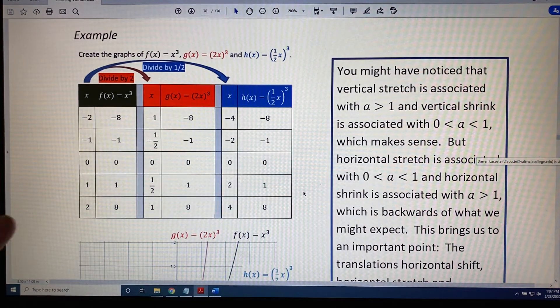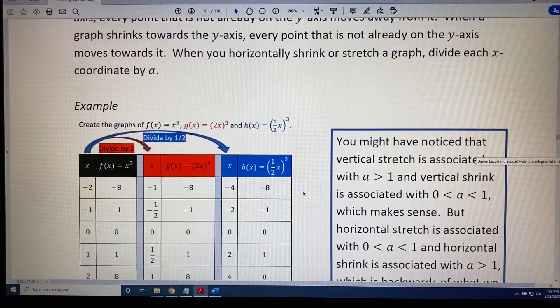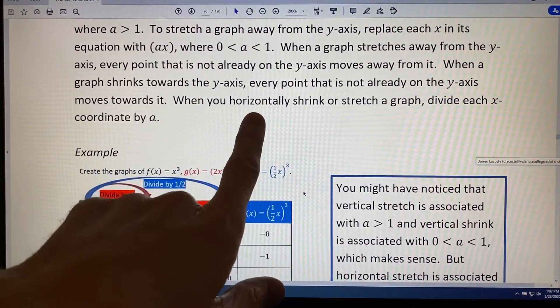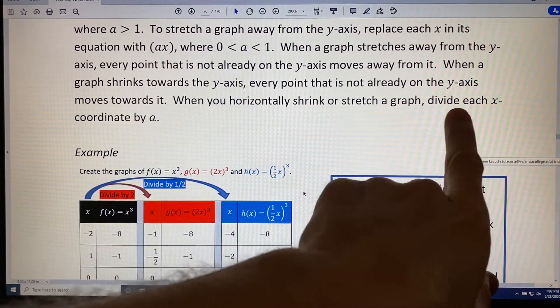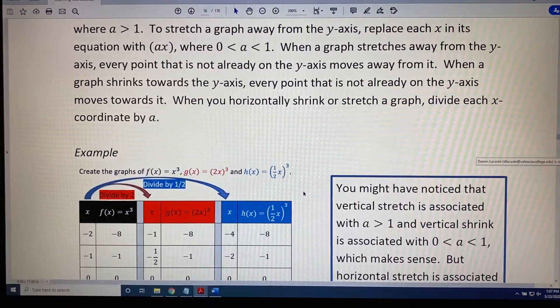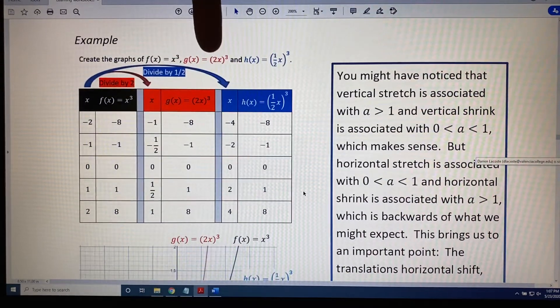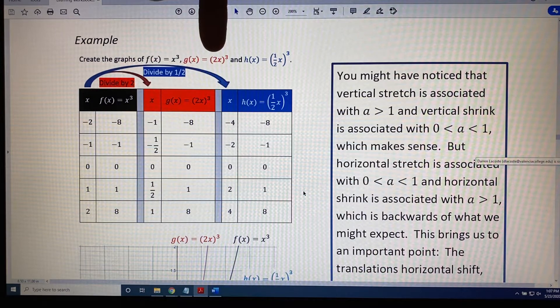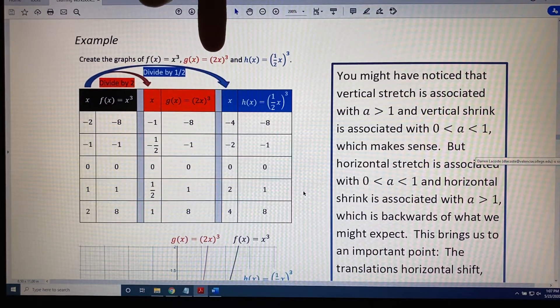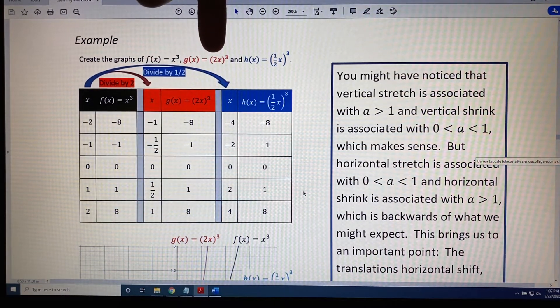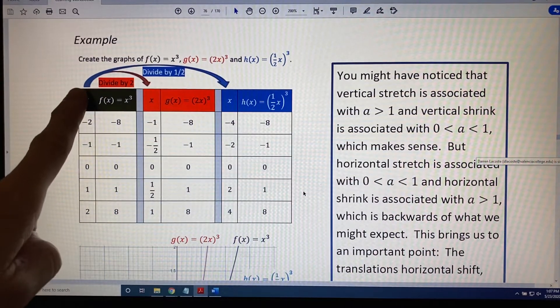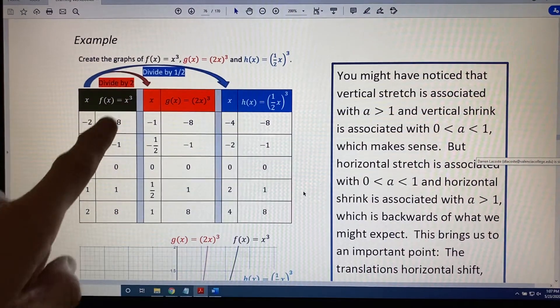So what do we do with a shrink? In fact, what do we do with any horizontal stretch or shrink? We divide the x-coordinate by a, where a is that number, right? For this case, for this problem, it's 2. So we divide all of the x-coordinates by 2. The y-coordinates do not change. We can see that shown here with this red arrow where it says divide by 2.